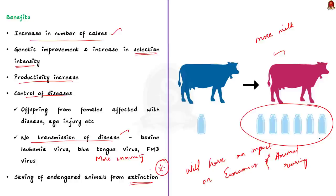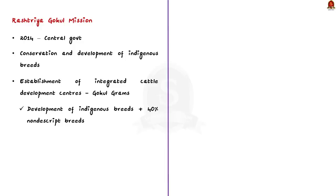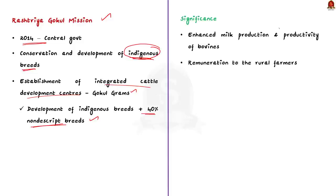When it comes to conservation of bovine breeds, you must remember the Rashtriya Gokul Mission, launched by the government since 2014 for the conservation and development of indigenous breeds in a focused and scientific manner. The mission also envisages the establishment of integrated cattle development centers called Gokul Grams, to develop indigenous breeds including up to 40% non-descript breeds. The scheme is important in enhancing milk production and productivity of bovines to meet growing demand for milk and making dairy more remunerative to rural farmers. Mentioning this mission in your answers will fetch you more marks.